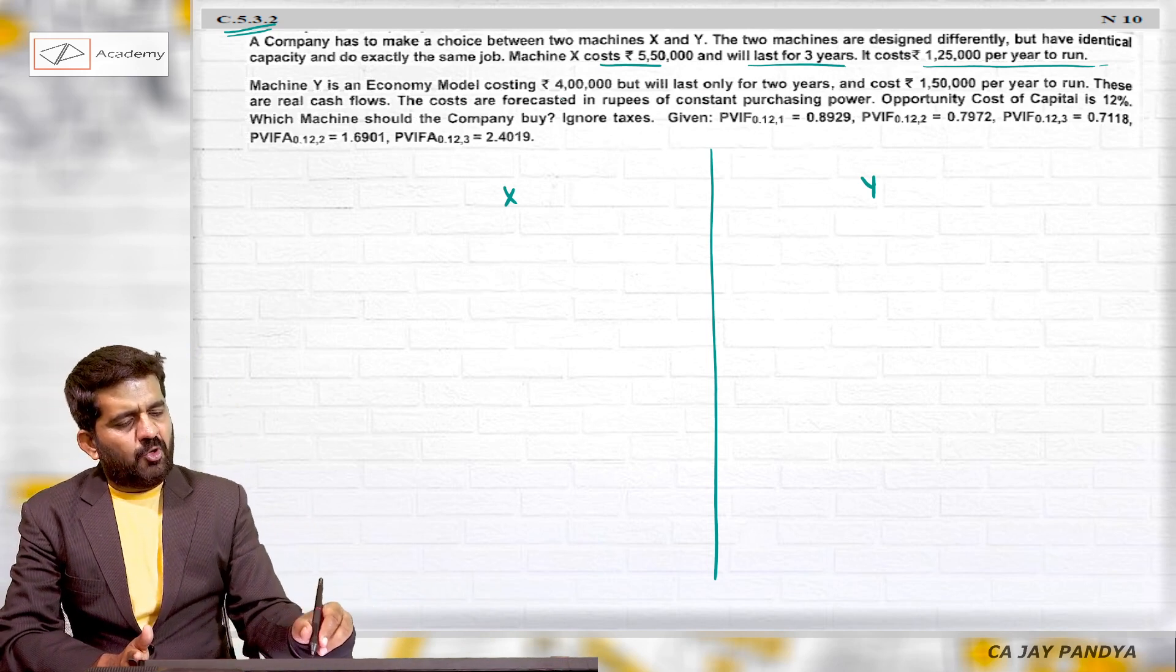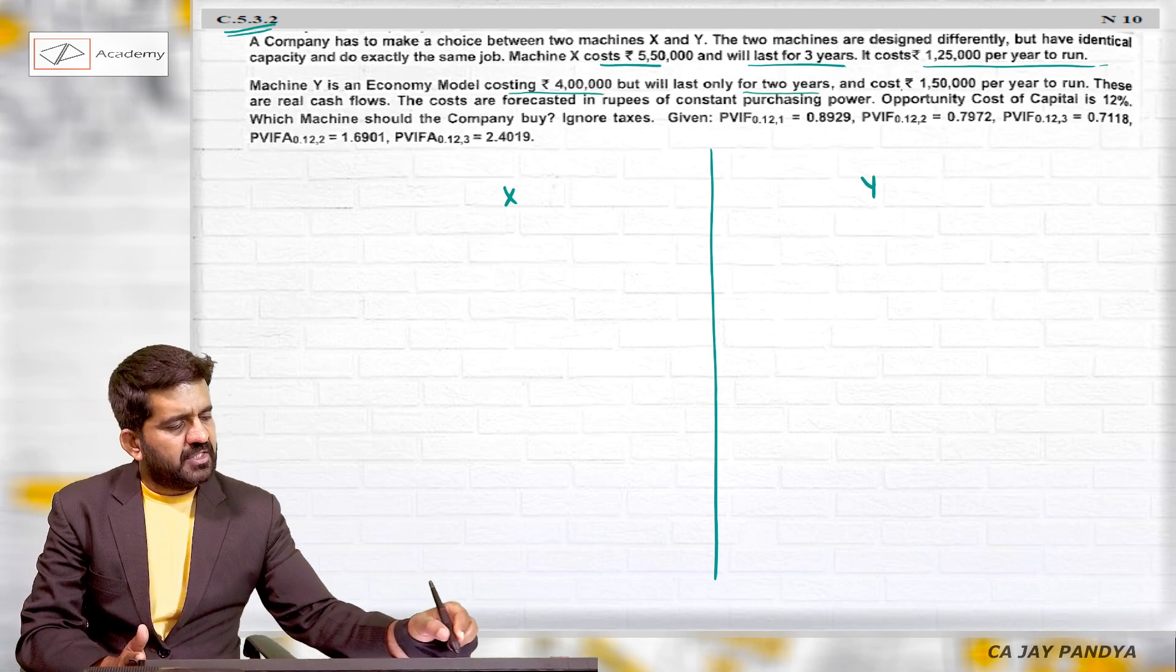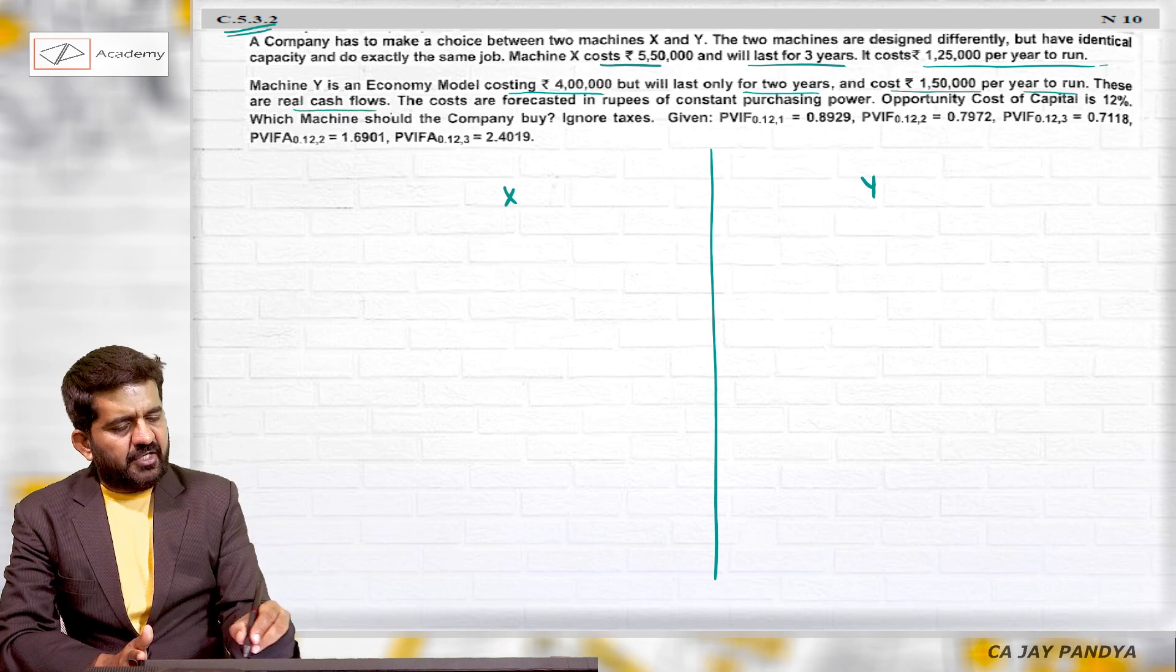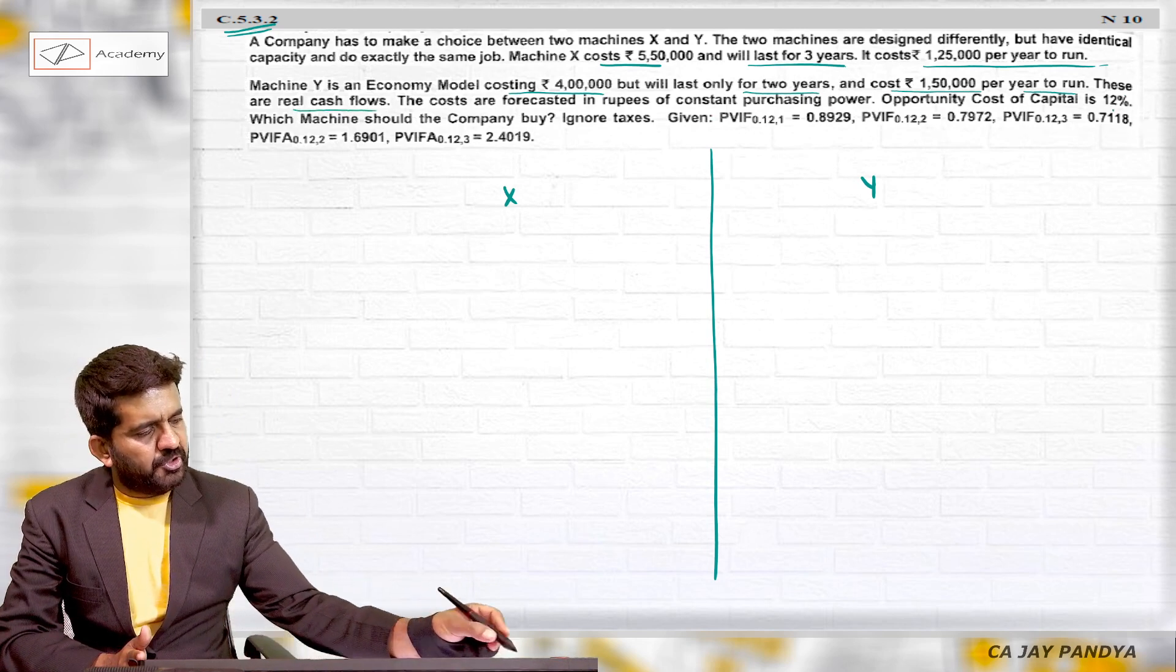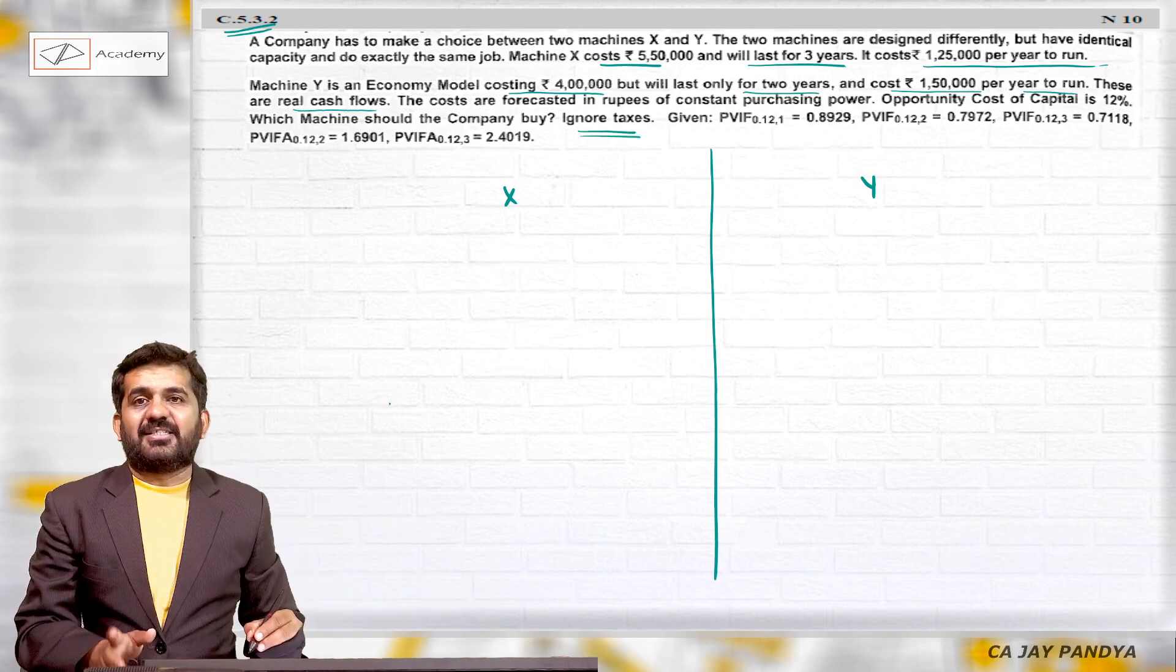Machine Y is an economy model costing 4 lakhs but will last only for two years and costs 1 lakh 50,000 per year to run. These are real cash flows forecasted in rupees of constant purchasing power. Opportunity cost of capital is 12% and the discount factor is given. Ignore taxes, so depreciation is not important.